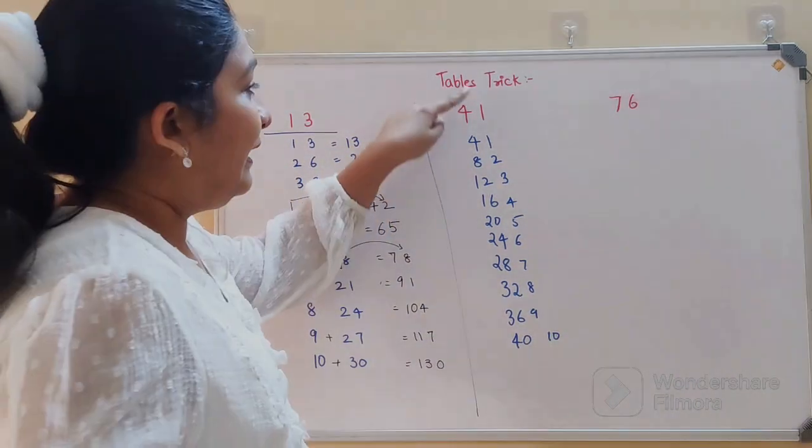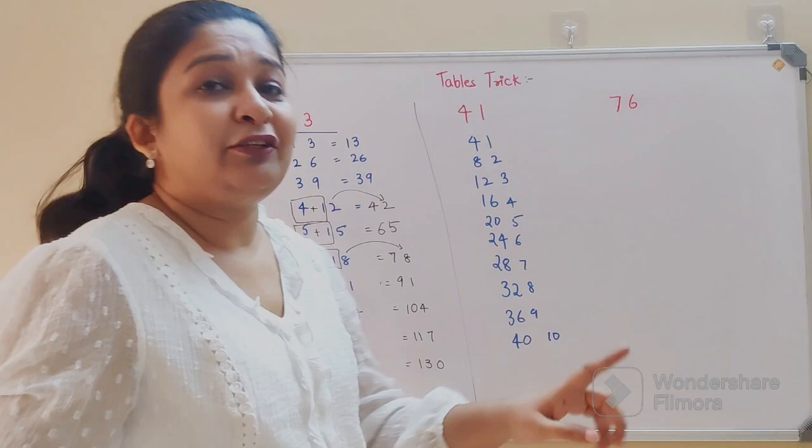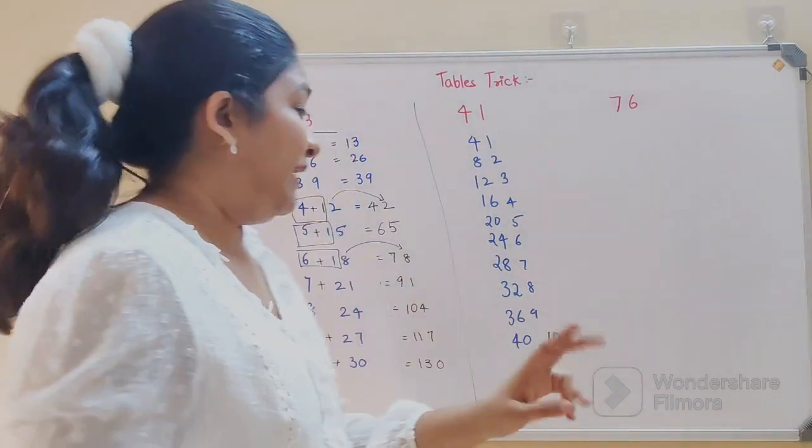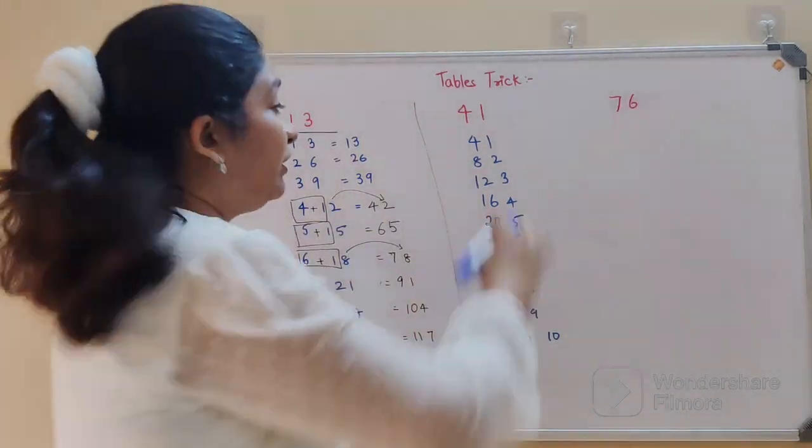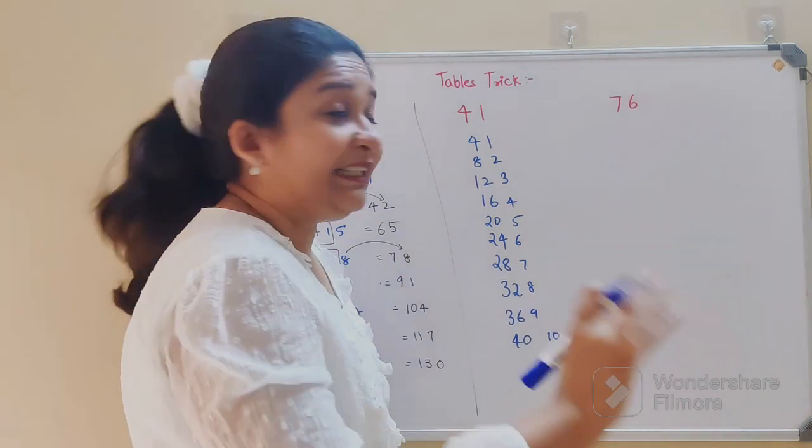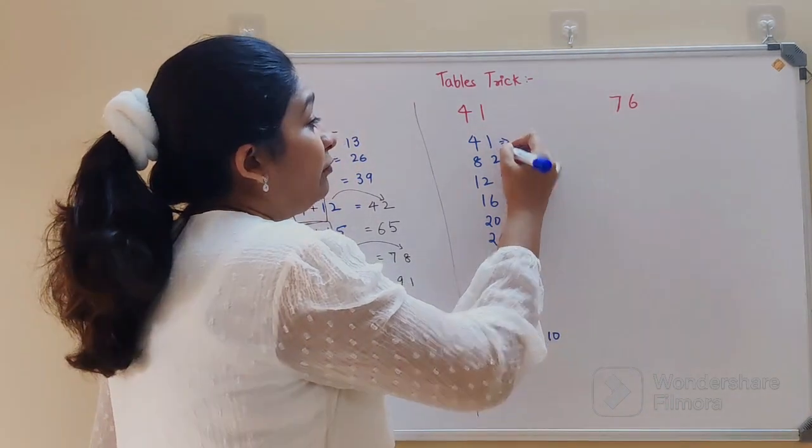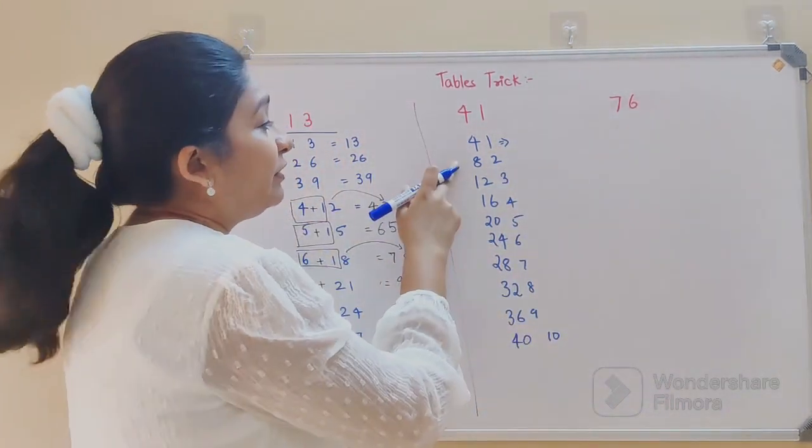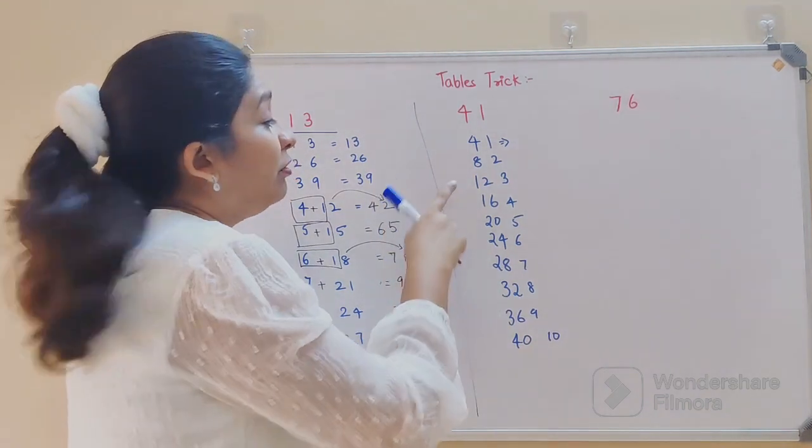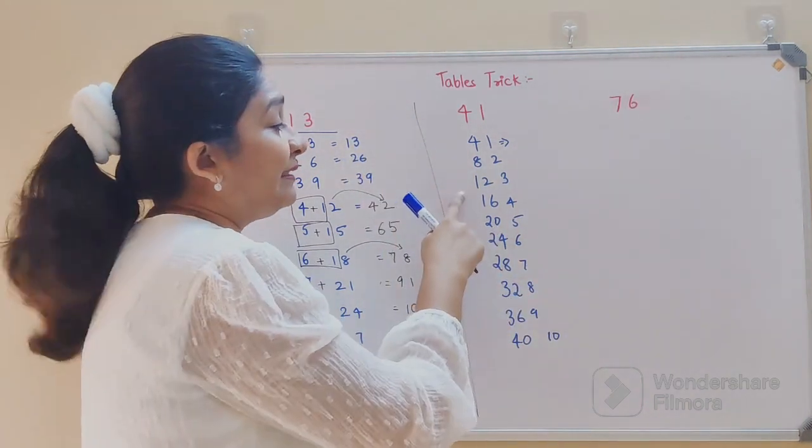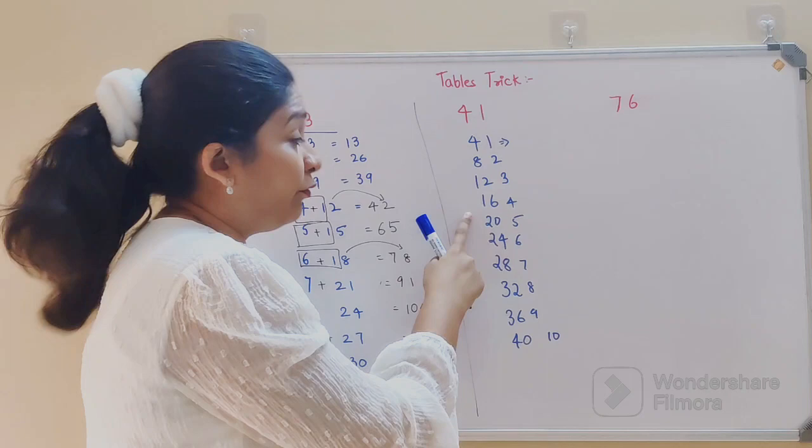Now if you look closely in your unit's digit, everywhere you just have a single digit answer except for this one. So here what you will do is you will not touch anything because this is actually your 41 ones are 41, 41 twos are 82, 41 threes are 123, 41 fours are 164, 41 fives are 205, 41 sixes are 246, 41 sevens are 287, 41 eights are 328, 41 nines are 369.